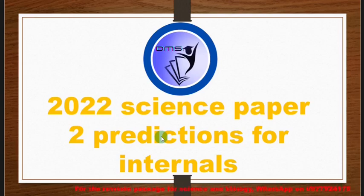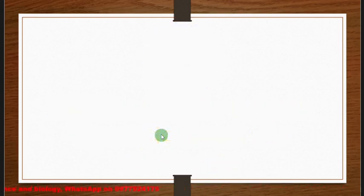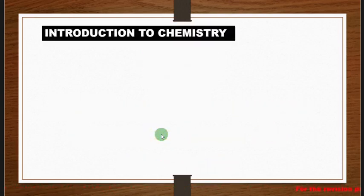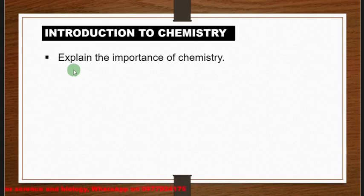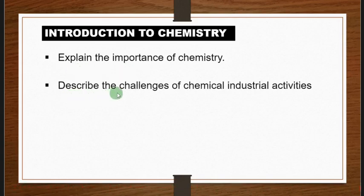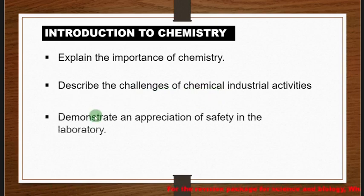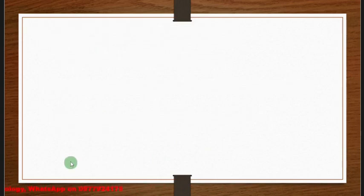We are starting with the introduction to chemistry. Under introduction to chemistry, you must be able to explain the importance of chemistry, describe the challenges of chemical industrial activities, and demonstrate an application of safety in the laboratory.